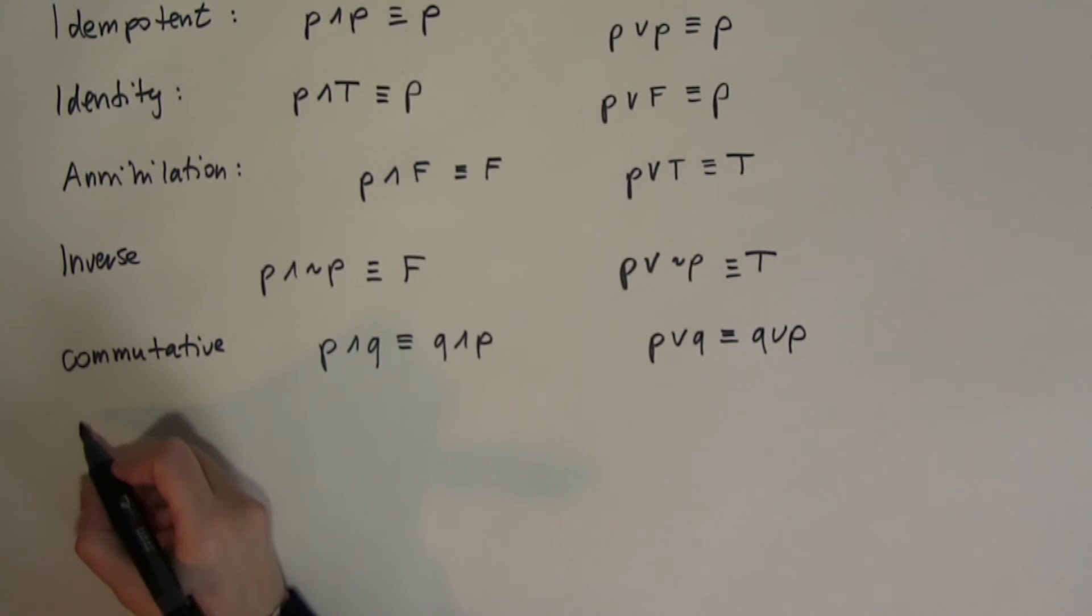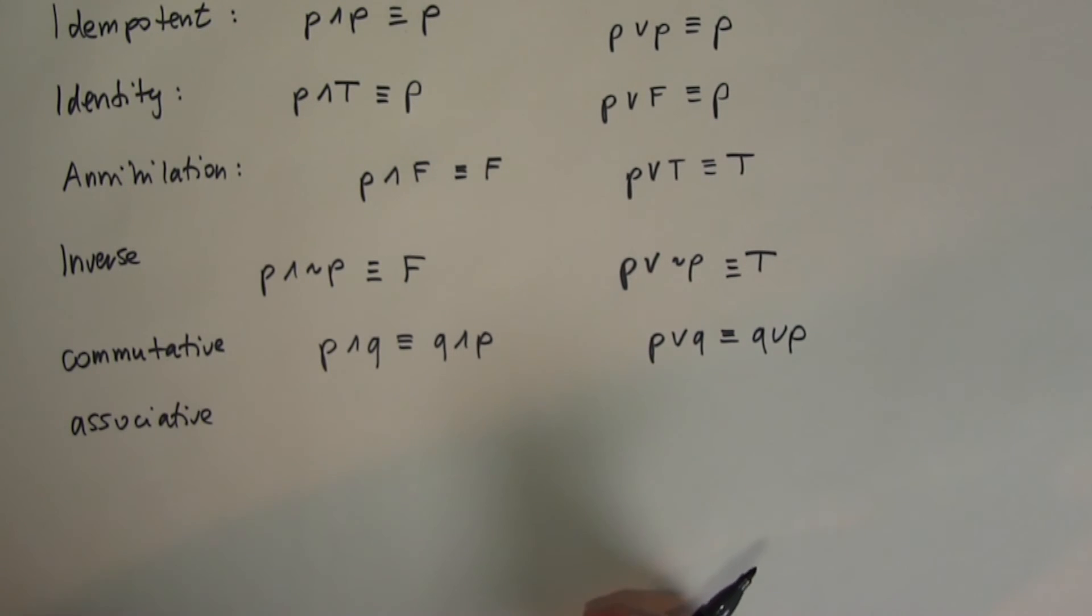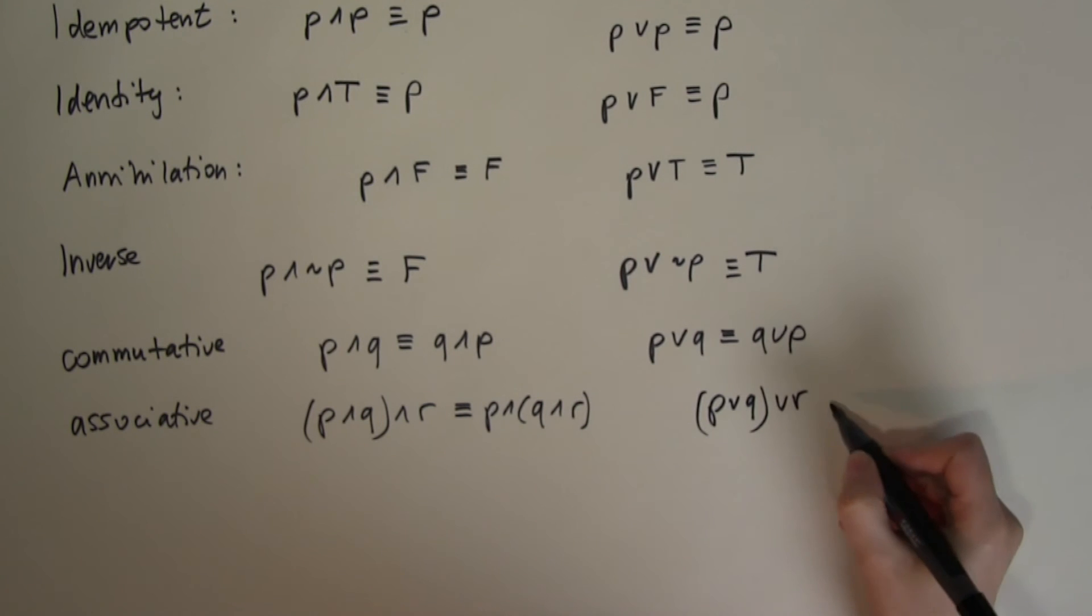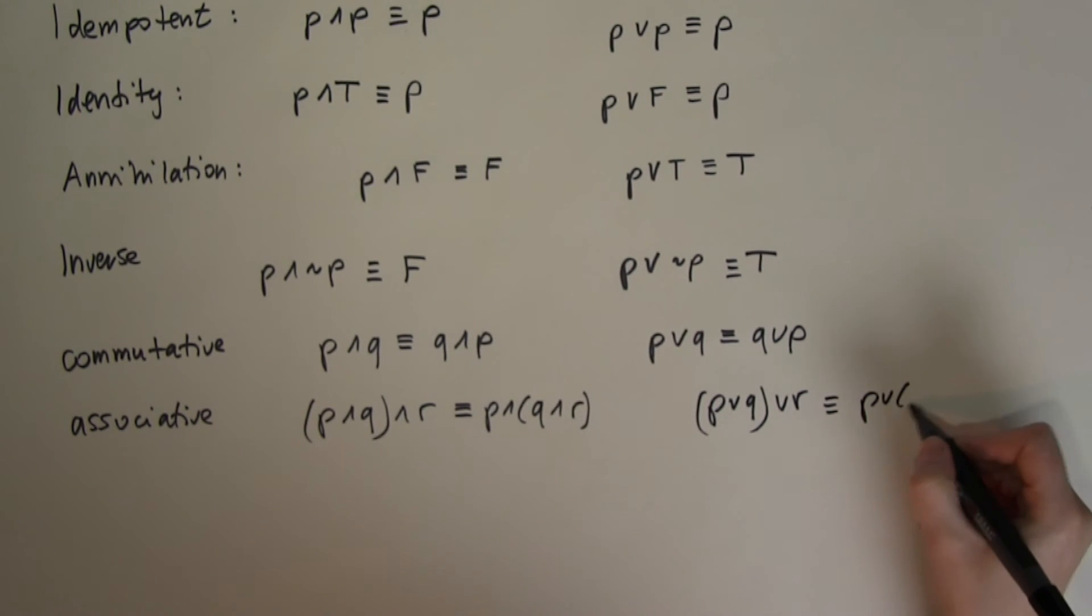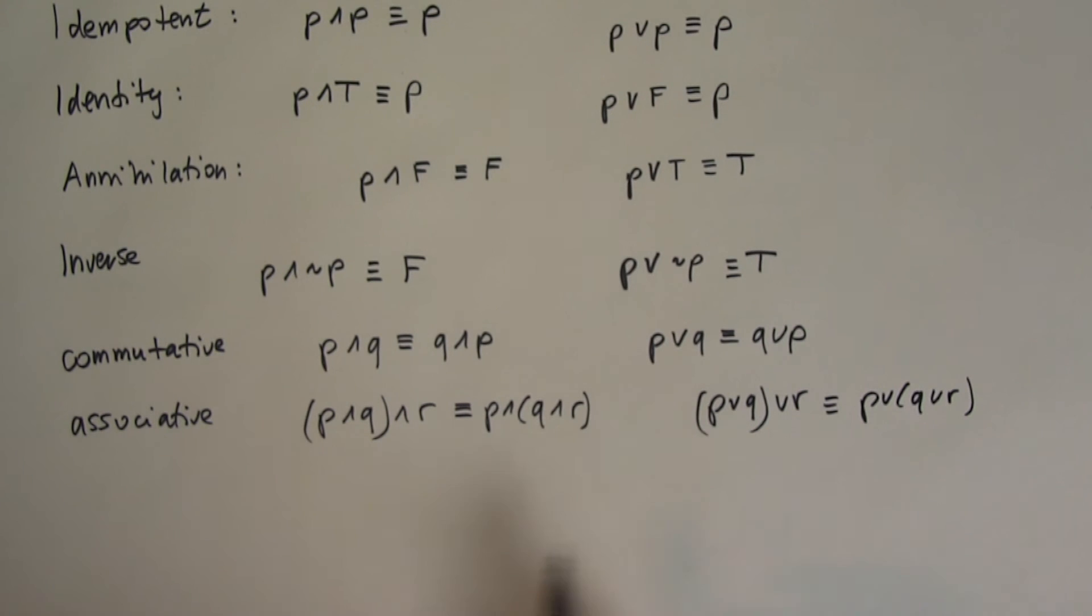Another law that you're probably familiar with from algebra is the associative law. Remember that you can use brackets and you can combine the brackets as long as the same operation is concerned. So what I mean is P and Q and R is exactly the same as P and Q and R. Or if I apply it to the OR operation, P or Q or R is exactly the same as P or Q or R. So as far as I'm using exactly the same operations, it doesn't matter where I place the bracket. The bracket can be flexibly placed and it's sometimes quite good to know to move around and manipulate these expressions to simplify them.